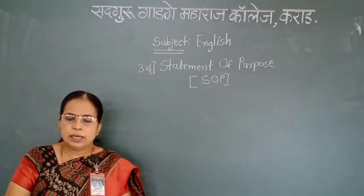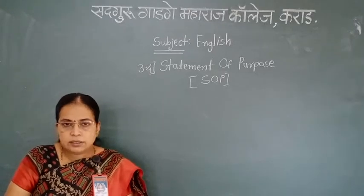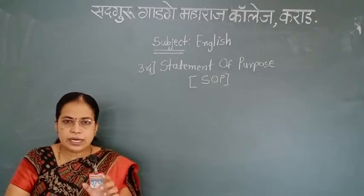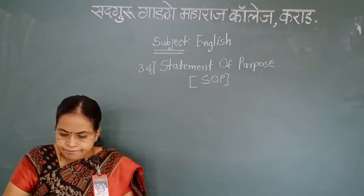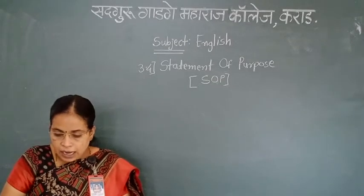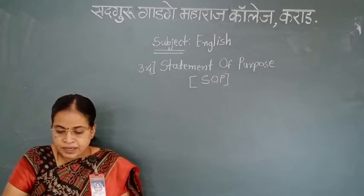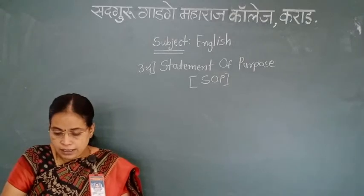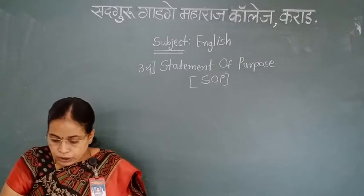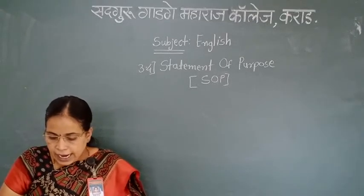In the first column, the professions are: businessman, artist, advocate, police, and scientist. In column 2, the qualities are: A. Reading, experimenting, researching. B. Alert, investigative, love for physical activity. C. Convincing, selling, risk taking. D. Imaginative, creative, thinking out of the box. And E. Logical reasoning, oratory and critical thinking.